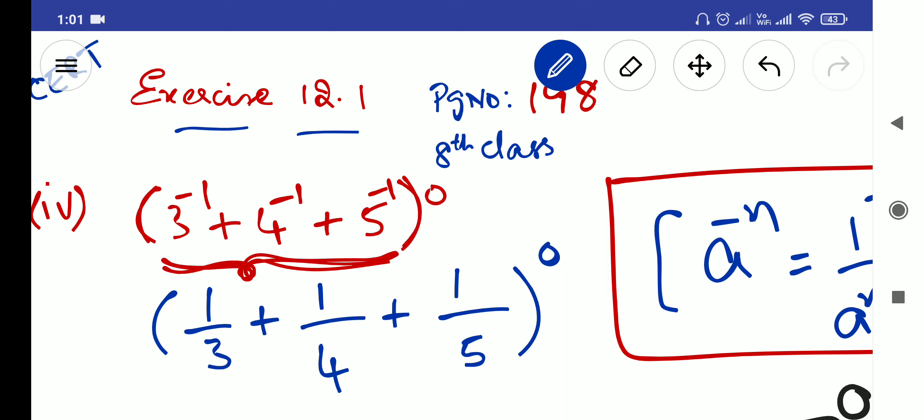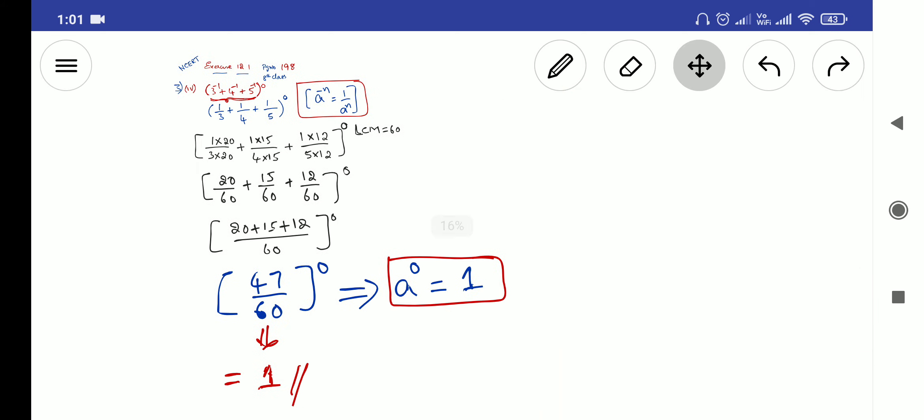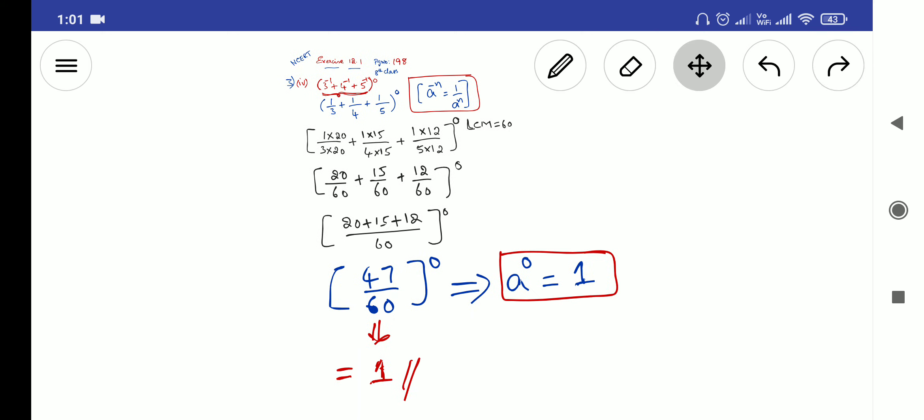Zero is there in the top, so that's why that result will be always one only. So no need of solving also this question, using this a power zero is equal to one. So this is about this section.